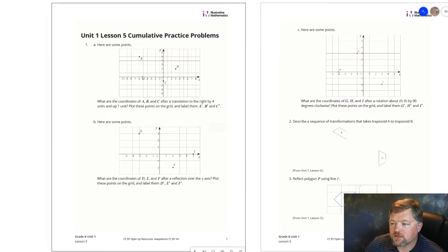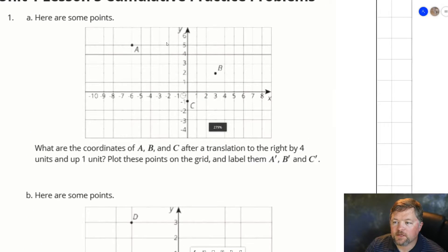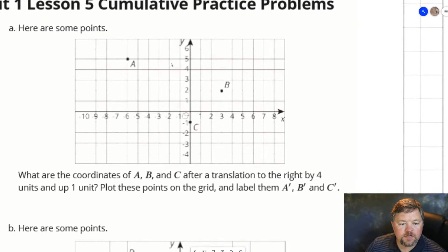First question here, here are some points. What are the coordinates of A, B, and C after a translation to the right by 4 units and up 1 unit? Plot these points on the grid and label them A', B', and C'.